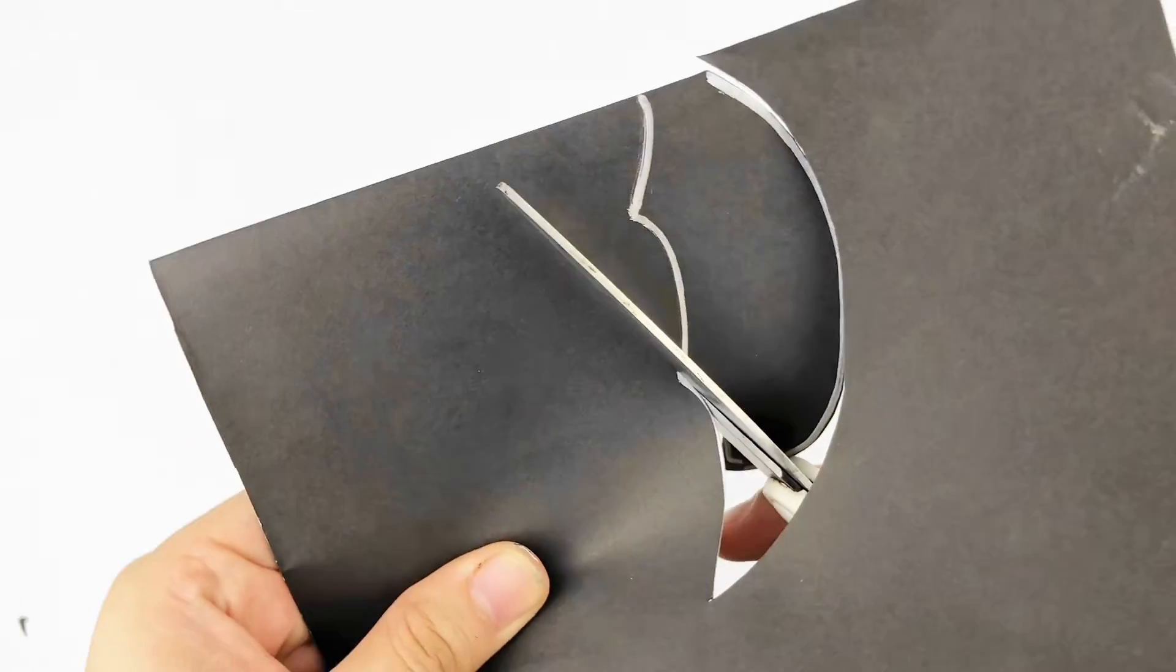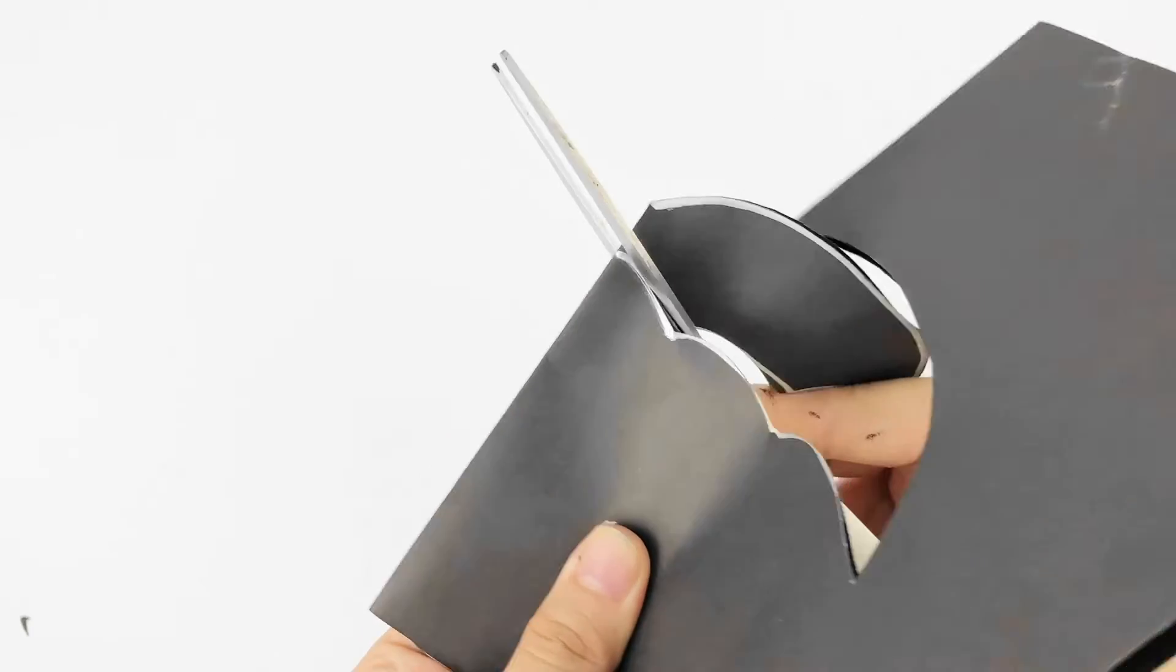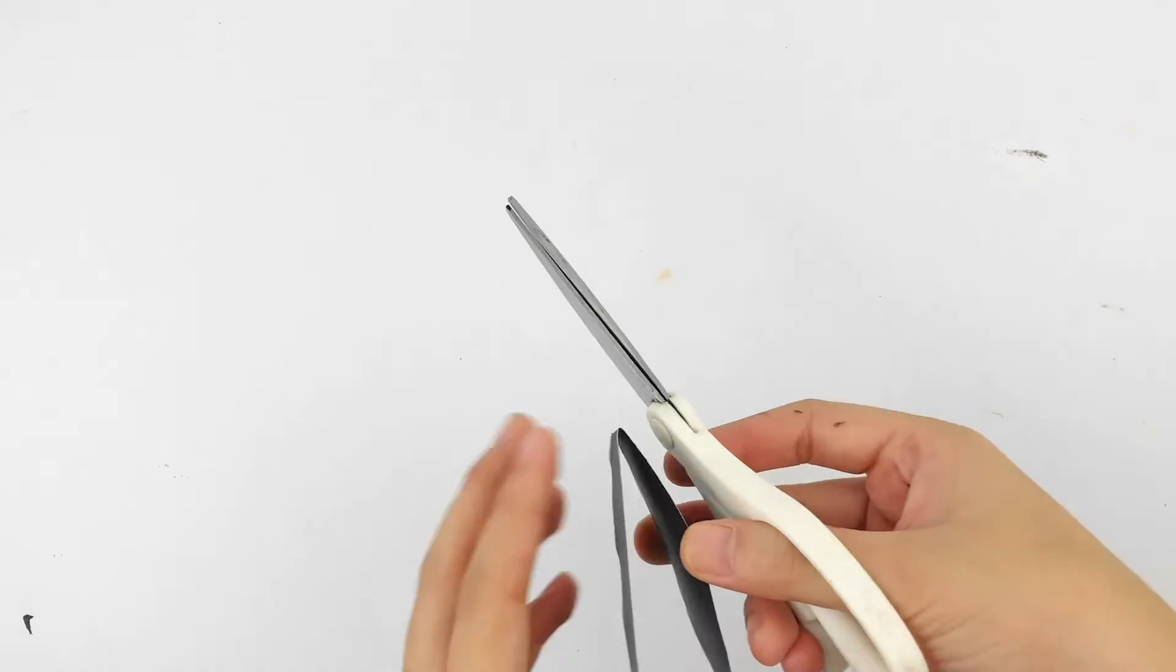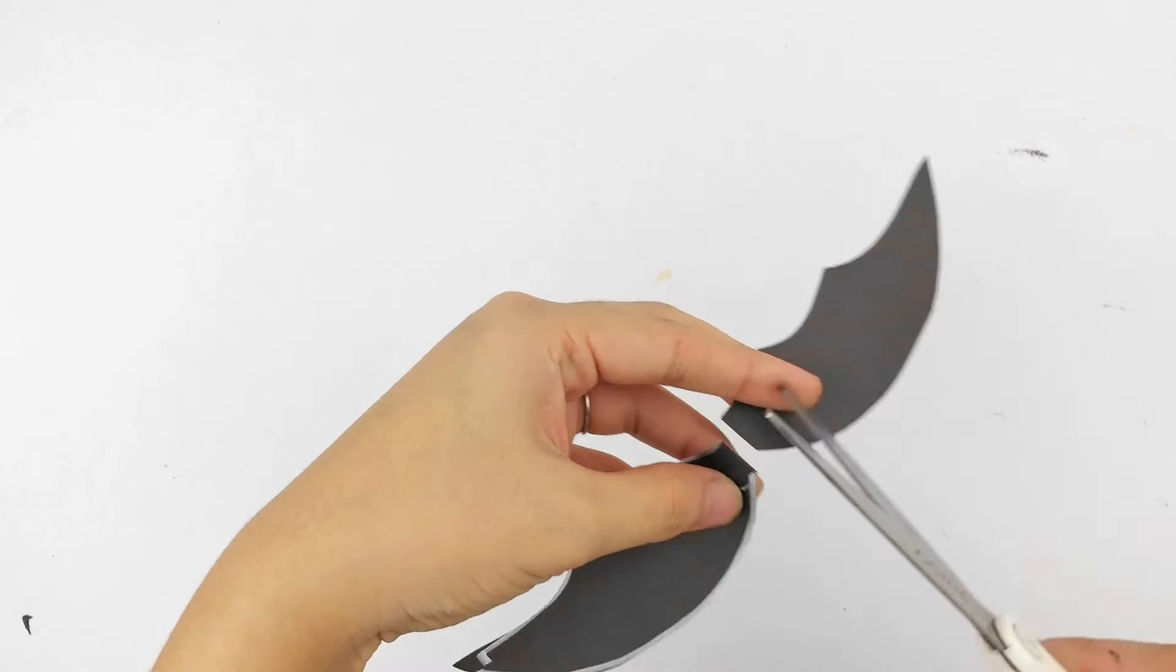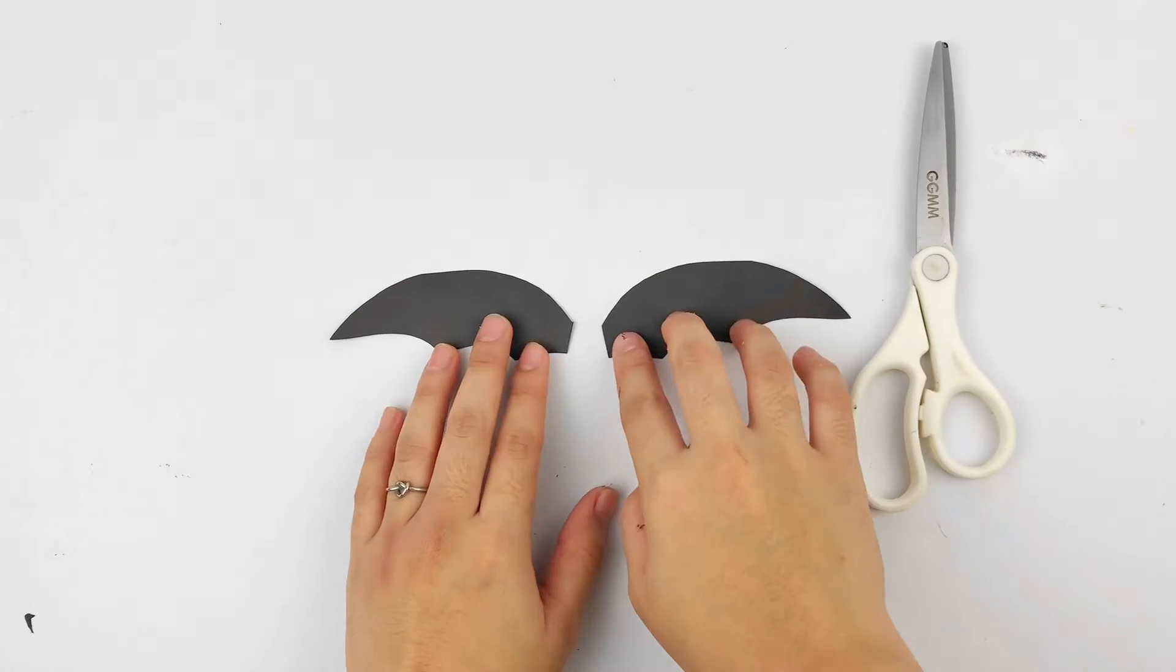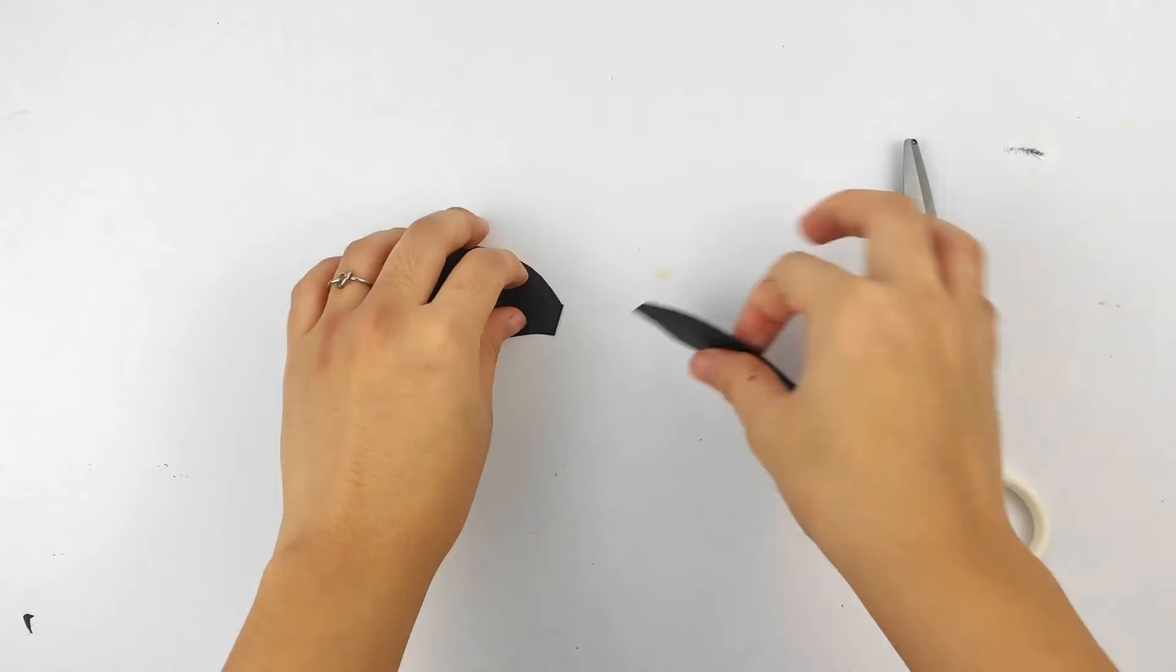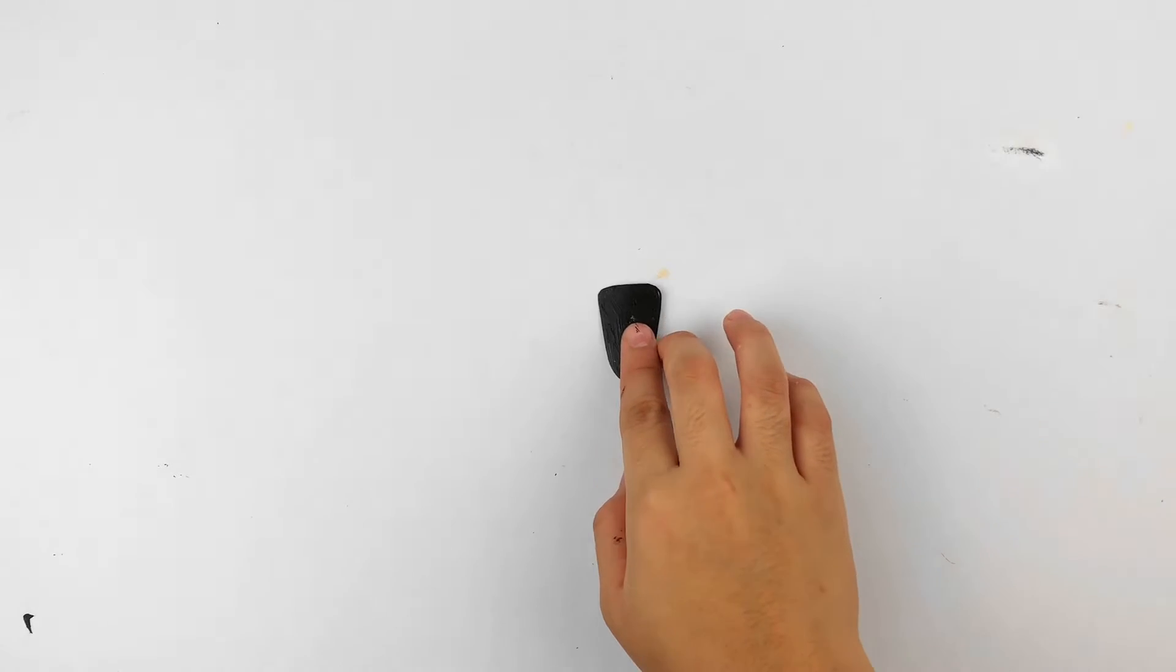Now these don't have to be perfect. That's why I didn't include a template on this. It's just really easy to freehand draw those wings and cut them on the center. And then voila, you have two matching bat wings.